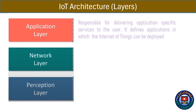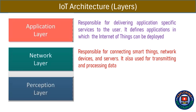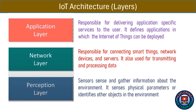The Application layer is responsible for delivering application-specific services to the user, and defines the applications in which IoT can be deployed. The Network layer is responsible for connecting smart things, network devices, and servers, and is also used for transmitting and processing data. In the Perception layer, sensors sense and gather information about the environment, sensing physical parameters or identifying other objects in the environment.